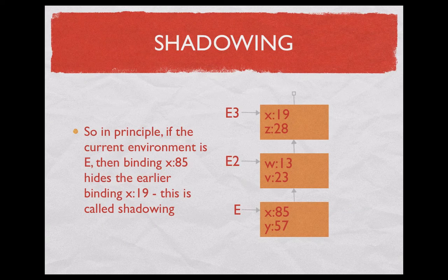We mentioned shadowing, I just want to say what it is. Shadowing is when one binding makes sure that another binding is not seen. So if you look at the environment E, we see that x has binding 85. So x is not 19, it's 85.